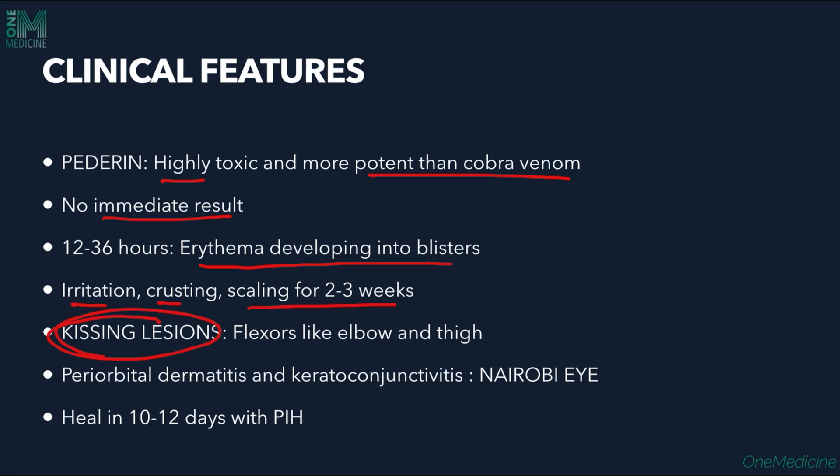Kissing lesions are characteristically seen on the flexors — specifically elbow flexors and thigh flexors. Periorbital dermatitis and keratoconjunctivitis are also seen; these are called Nairobi eye, caused by transfer of the vesicant toxin. The lesions heal in 10–12 days with post-inflammatory hyperpigmentation.